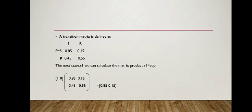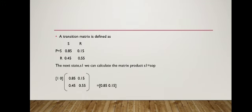The next day state is S1. We can calculate the matrix product: S1 equals S times P. The matrix [1, 0] multiplied by the transition matrix [0.85, 0.15; 0.45, 0.55] equals [0.85, 0.15].